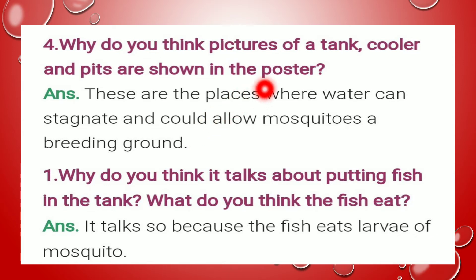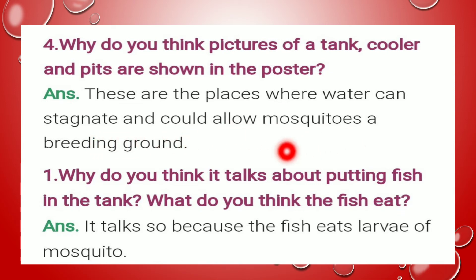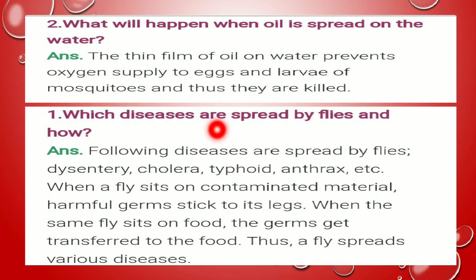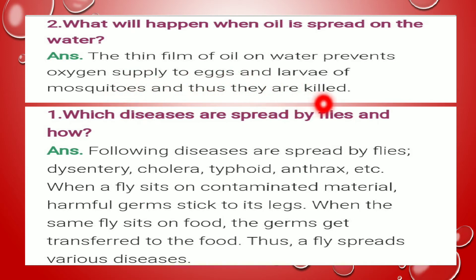Why do you think pictures of a tank, cooler and pits are shown in the poster? ये वो जगहें हैं जहाँ पर पानी इकट्ठा हो सकता है, and could allow mosquitoes a breeding ground — mosquitoes को पनपने के लिए जगह मिल सकती है. Why does it talk about putting fish in the tank? It talks so because the fish eats larva of mosquito — मछलियाँ mosquitoes के larvae को खा जाती हैं. What will happen when oil is spread on water? The thin film of oil prevents oxygen supply to eggs and larvae of mosquitoes, and thus they are killed. Eggs को oxygen नहीं मिल पाएगी और larva मर जाएगी.